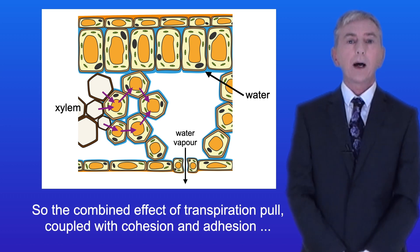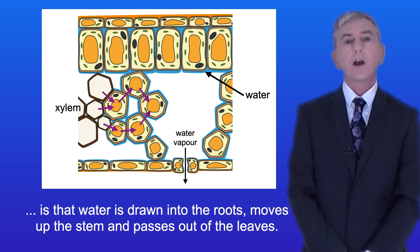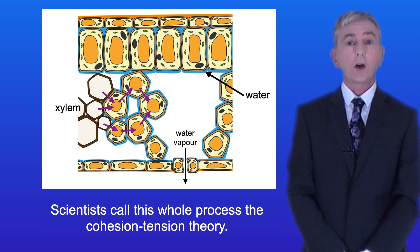So the combined effect of transpiration pull coupled with cohesion and adhesion is that water is drawn into the roots, moves up the stem and passes out of the leaves, and scientists call this whole process the cohesion-tension theory.